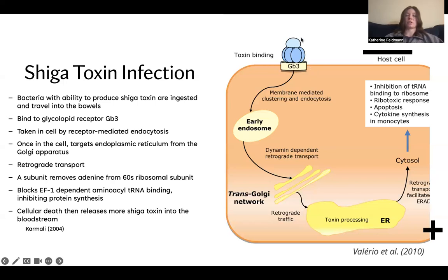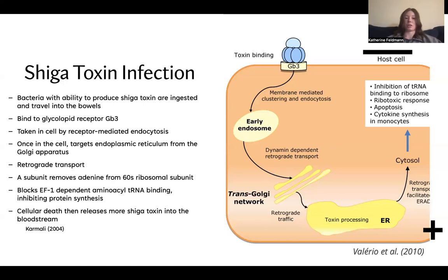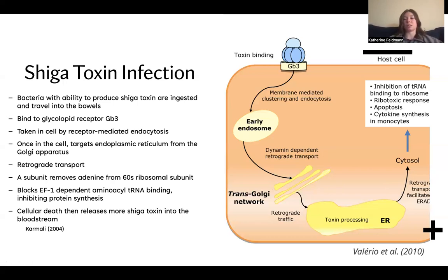This receptor is going to mediate endocytosis, where the toxin is now taken in through the host cell, and it is able to travel undetected through an endosome all the way to the Golgi apparatus. Once it's at the Golgi apparatus, it goes through a process called retrograde transport, where the Golgi apparatus transports it to the endoplasmic reticulum. In the endoplasmic reticulum, the A subunit is going to remove the adenine from the 60S ribosomal subunit, which is going to ultimately block EF1-dependent aminoacyl tRNA binding, which then inhibits protein synthesis. And once protein synthesis is inhibited, the host cell is ultimately going to die.